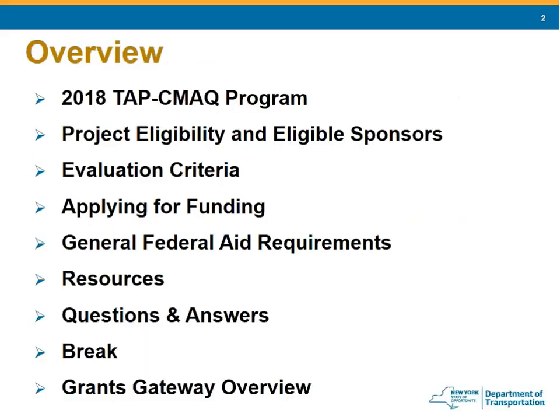This is the 2018 TAP-CMAQ program. We're going to talk about program eligibility and eligible sponsors, the evaluation criteria, how these are going to be scored and what we're looking for in scoring these applications, how to apply for funding. This is a federal aid program, so general federal aid requirements are part of this program. We'll cover what resources are available, questions and answers, a break, and then the Grants Gateway overview.